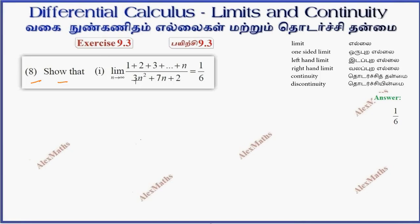Question number 8: Show that the limit of the expression equals 1 by 6. The numerator is 1 plus 2 plus 3 plus dot dot dot n, which is the sum of the first n natural numbers, equal to n(n+1) by 2.